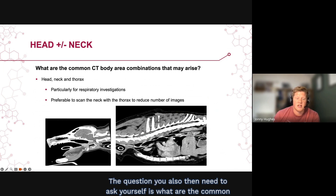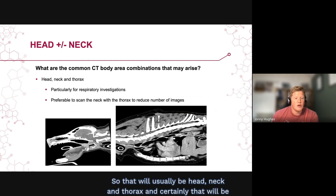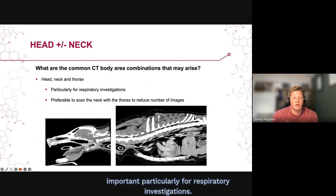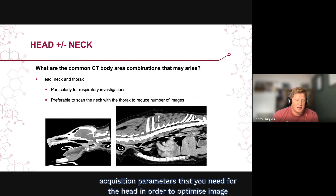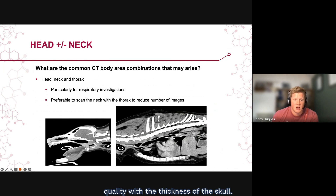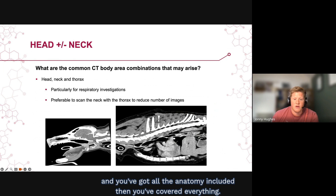You also need to ask what the common CT body area combinations are when imaging the head plus or minus the neck. That will usually be head, neck and thorax, which is particularly important for respiratory investigations. It is generally preferable to scan the neck with the thorax, as you have a reduced number of images and don't need the same acquisition parameters required for the head to optimise image quality with the skull thickness. Ultimately, if there's an overlap between the reconstruction field of view and all anatomy is included, then everything is covered.